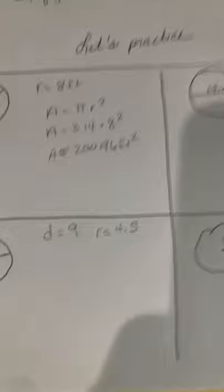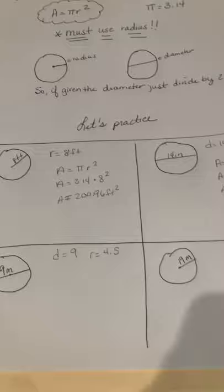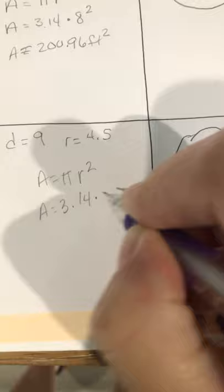All right, go ahead and pause this video and you do it. All right, welcome back. So that's area equals pi r squared. Area equals 3.14 times 4.5 squared. This one, that's the number that we're going to use.